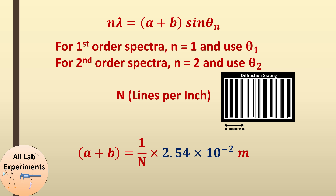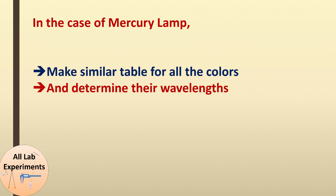We can also find the error in measurement since we know the standard value of the wavelength of the sodium lamp. In case we have a mercury lamp instead, we will have many wavelengths of different colors. We make similar tables for all colors and determine their wavelengths. Now let's move towards the second part of the experiment — finding the dispersive power of the grating.